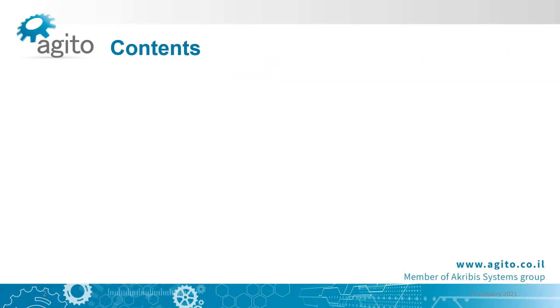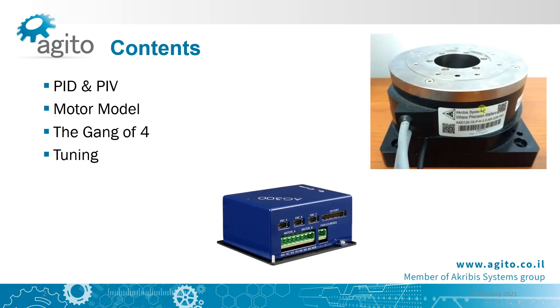In this tutorial we'll be covering PID and PIV controllers and the difference between them, what a general motor model looks like, what we want from our controller, and we'll identify a dynamic system and tune its PIV parameters. I'll be using an AGD200 and an AXD120, which is an Acrobus rotary motor, for this demo.